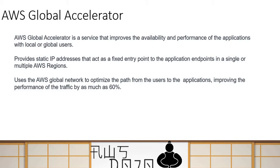Global Accelerator enhances performance by optimizing the traffic path to the application. For example, if your application is deployed in the US or Europe and your user is sitting in Sydney, Australia, Global Accelerator can optimize the path all the way from Australia to Europe or Australia to the US, improving performance by as much as 60%, which gives a better end-user experience.